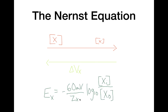The Nernst equation calculates the equilibrium potential. The equilibrium potential of an ion, given by E subscript x, is defined as the cell membrane potential at which an ion reaches equilibrium. We can calculate the equilibrium potential from the Nernst equation by knowing the charge of that ion and the concentration of that ion inside the cell and outside the cell. When you plug in those numbers, you can calculate the equilibrium potential. I hope this video helps you have a better understanding of what the Nernst equation is trying to describe. I hope to see you next time, and stay smart, everyone.